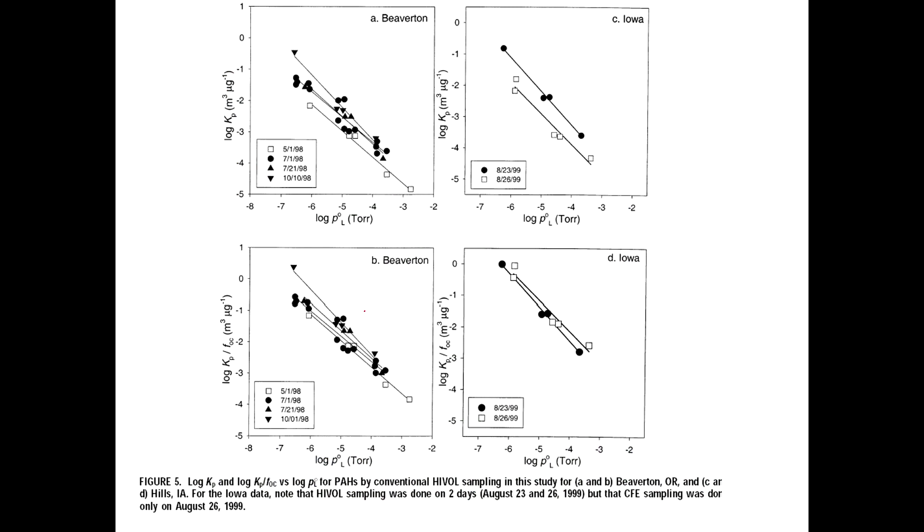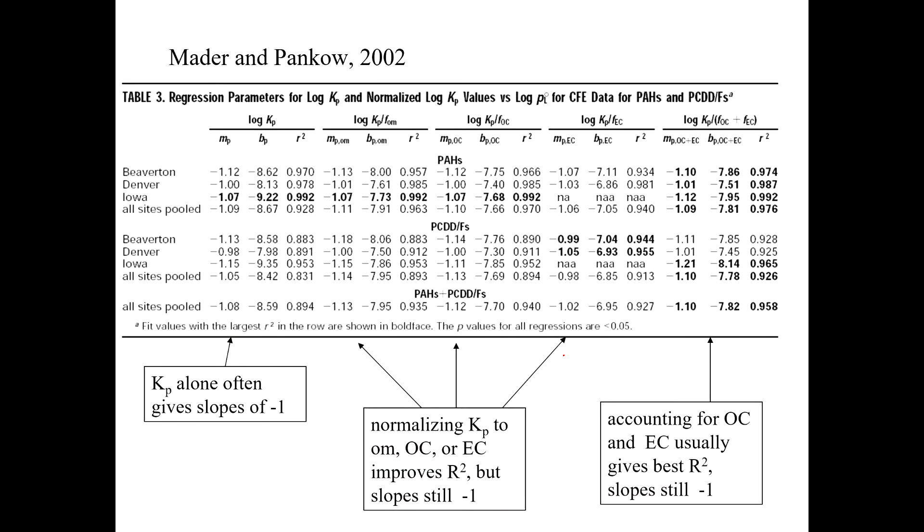Here's some examples, log of Kp, this is actually normalized to the fraction of organic carbon. But here it's just plain old log Kp, different locations, this is Beaverton and this is Iowa. Beaverton, Oregon, there it is. Two different locations and just looking at the same data but normalizing it two ways. One is just straight log Kp and the other is Kp divided by Foc. You can see these lines are relatively far apart but when you normalize them to Foc, these lines now are much closer together. So that makes sense that perhaps Foc is a driving force here in determining what's happening to the gas particle partitioning.